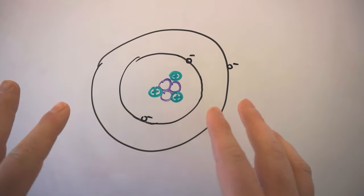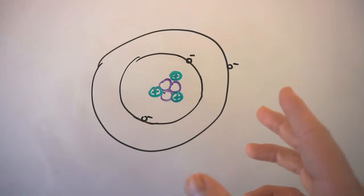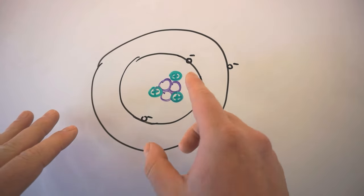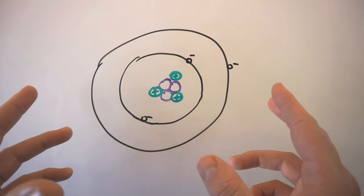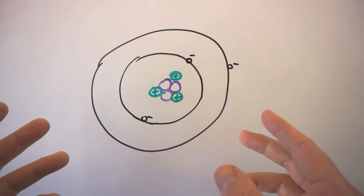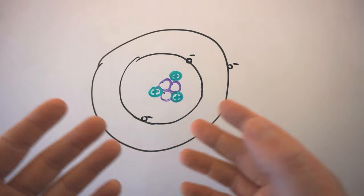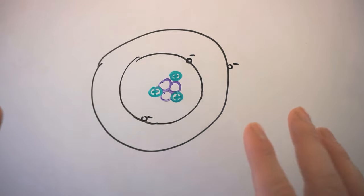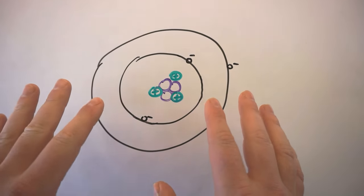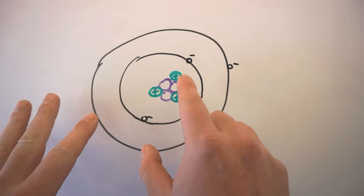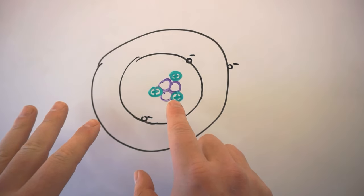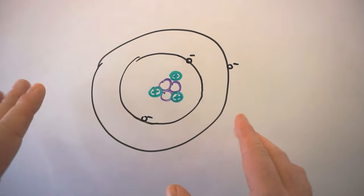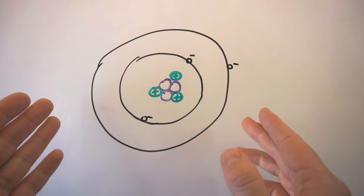This is all well and good if we know how many protons, neutrons and electrons are in our element that we want to draw — it makes it very straightforward. But how do we actually find out how many protons, neutrons and electrons are in an element?